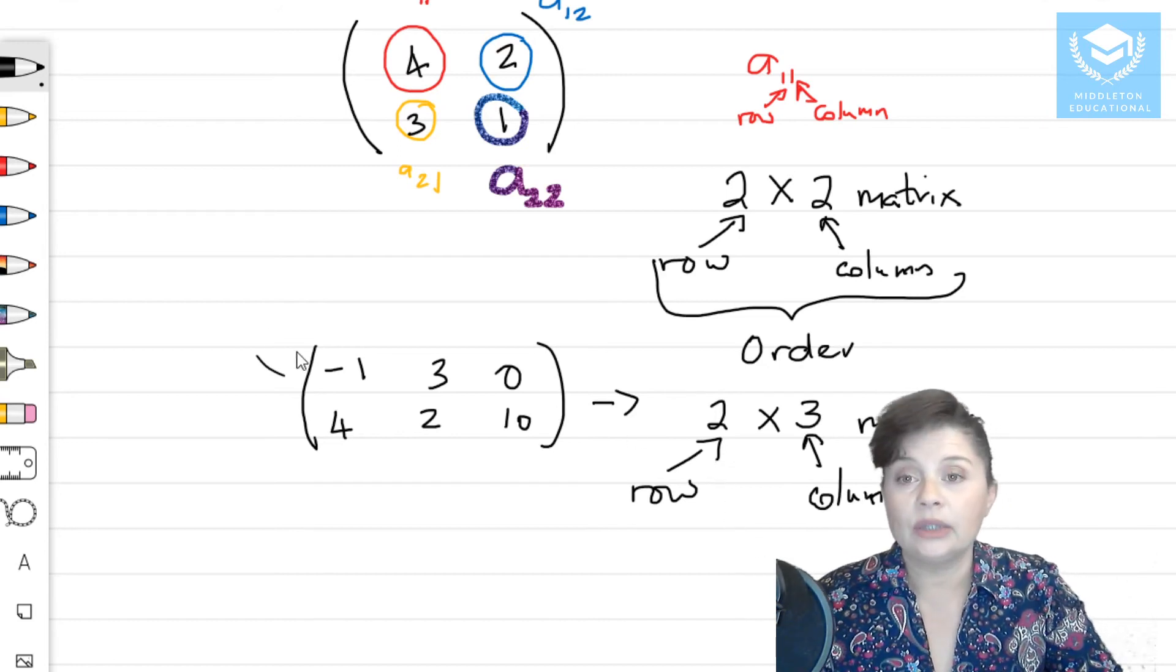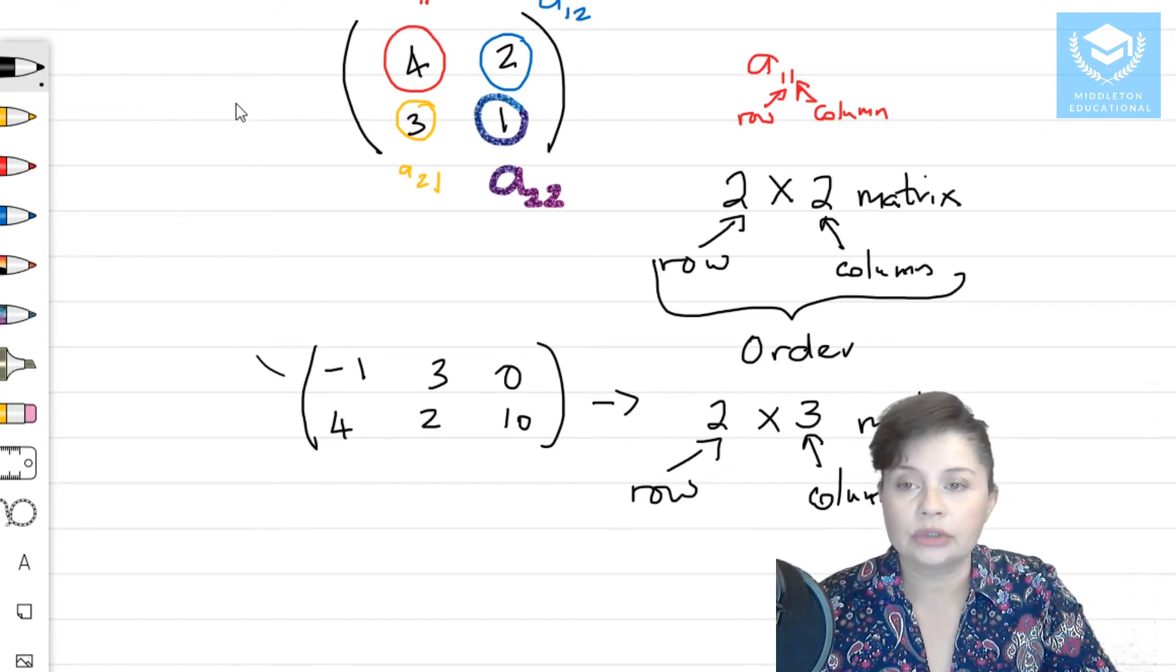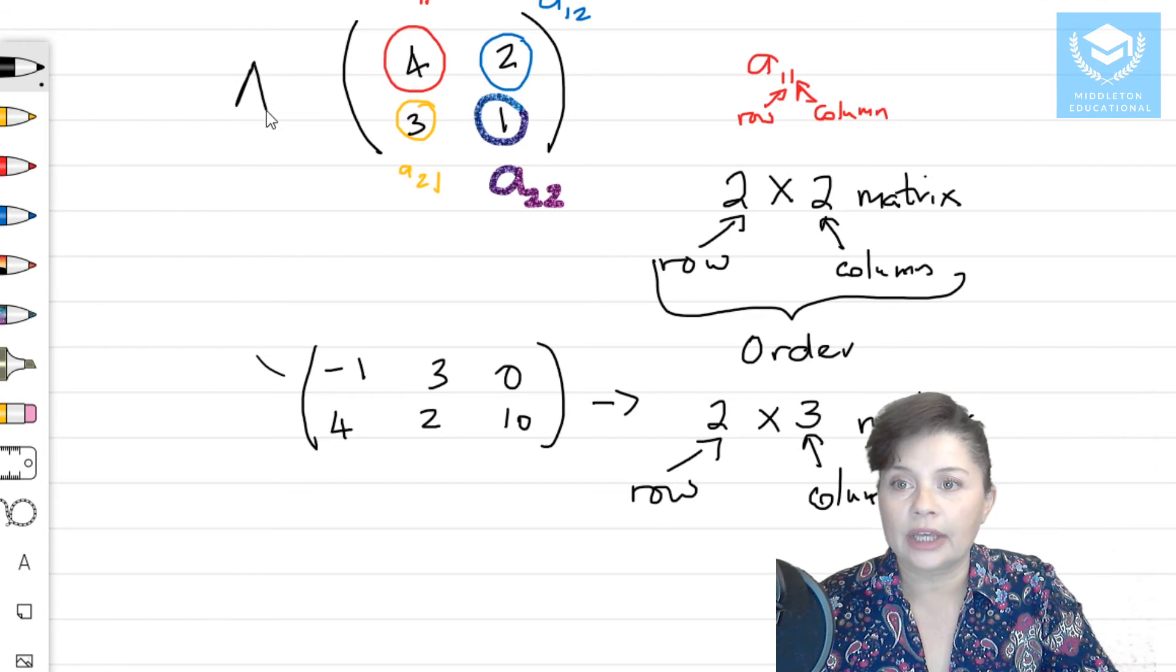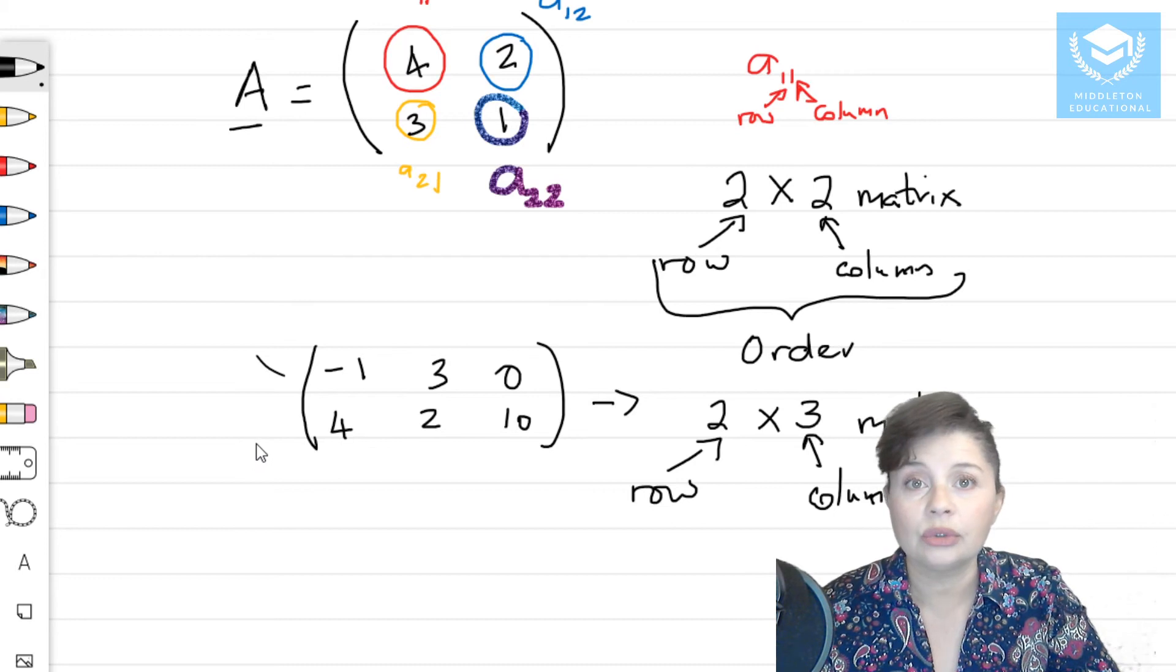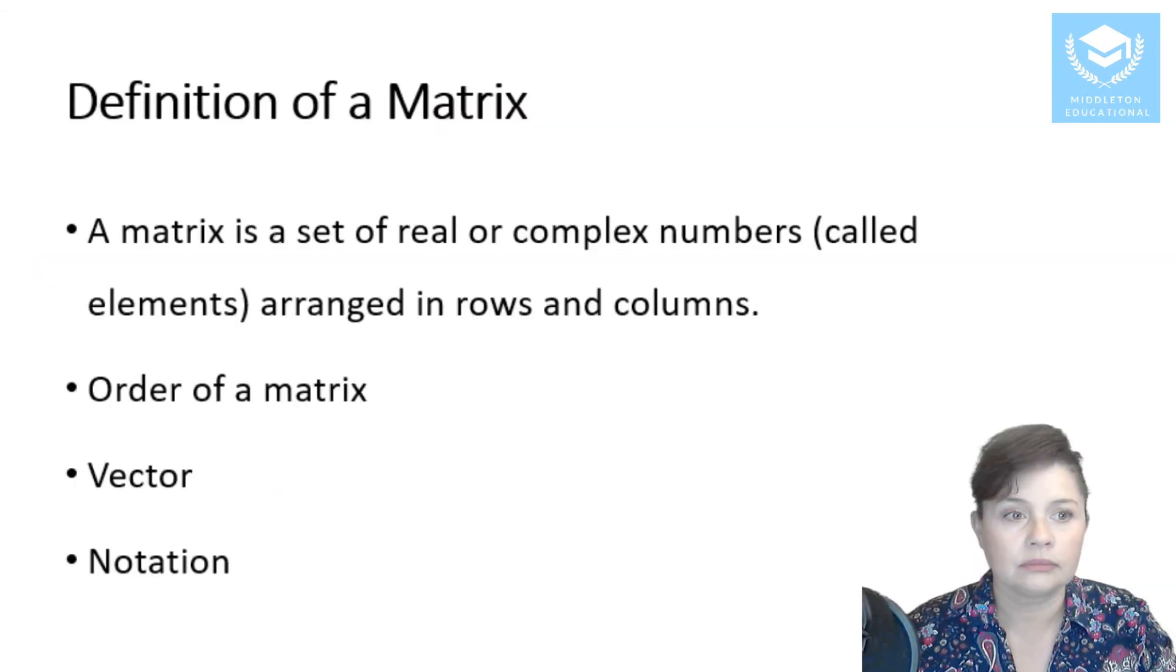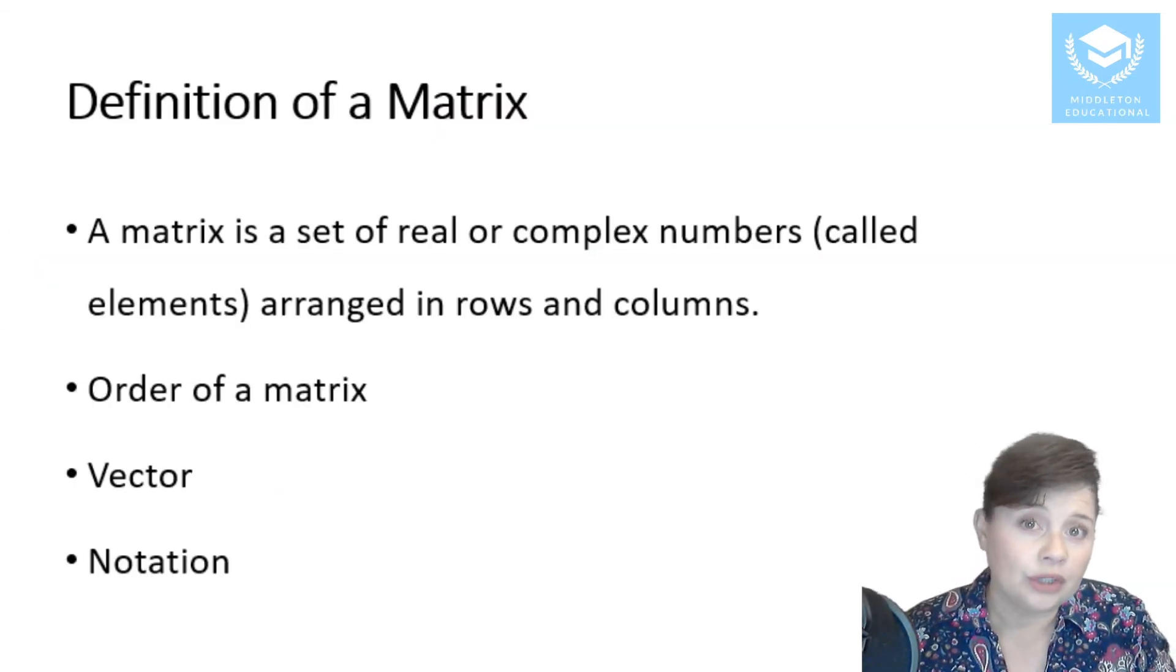And the way we denote the matrix, just for notation, say we call that A and we put a little line at the bottom. That shows your matrix. So that was the order of the matrix.